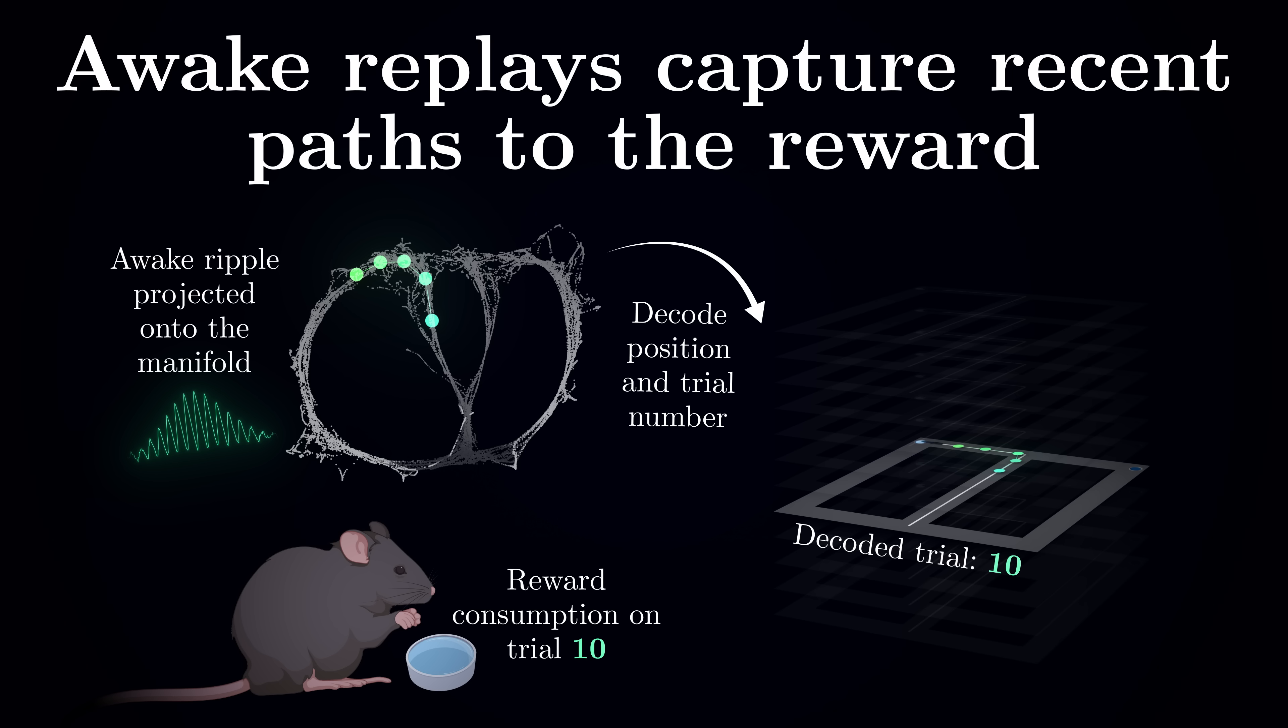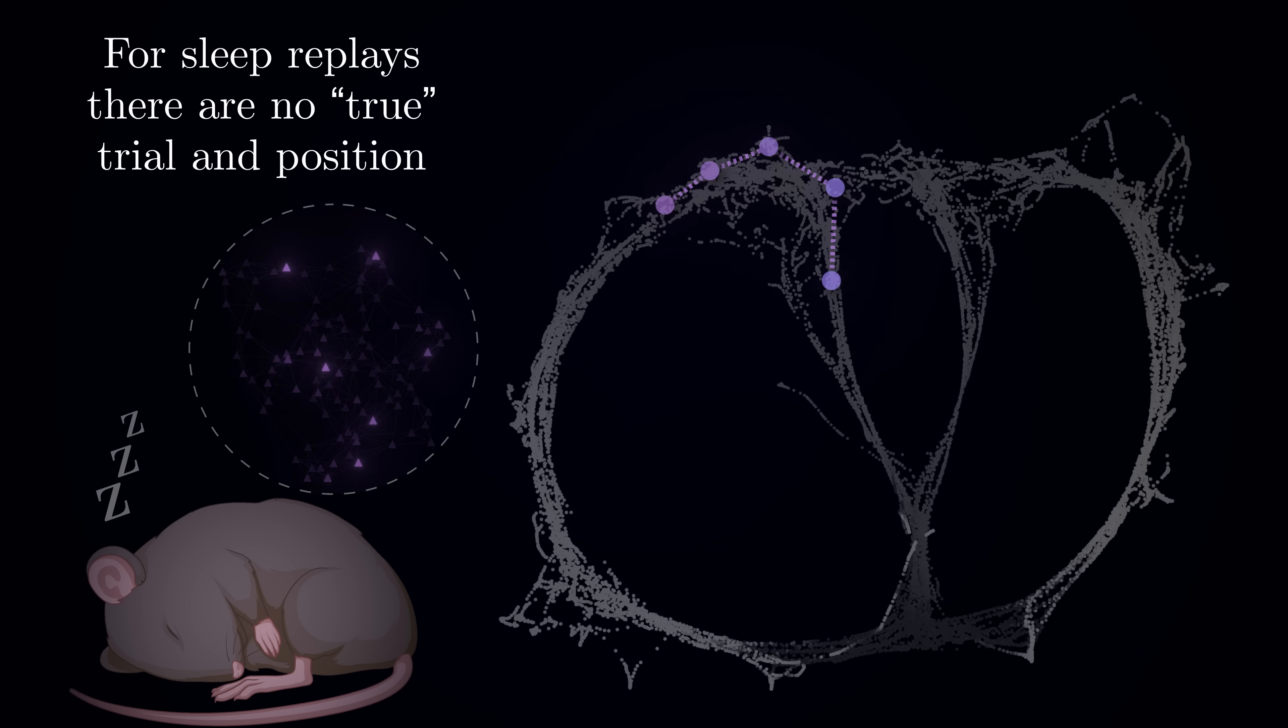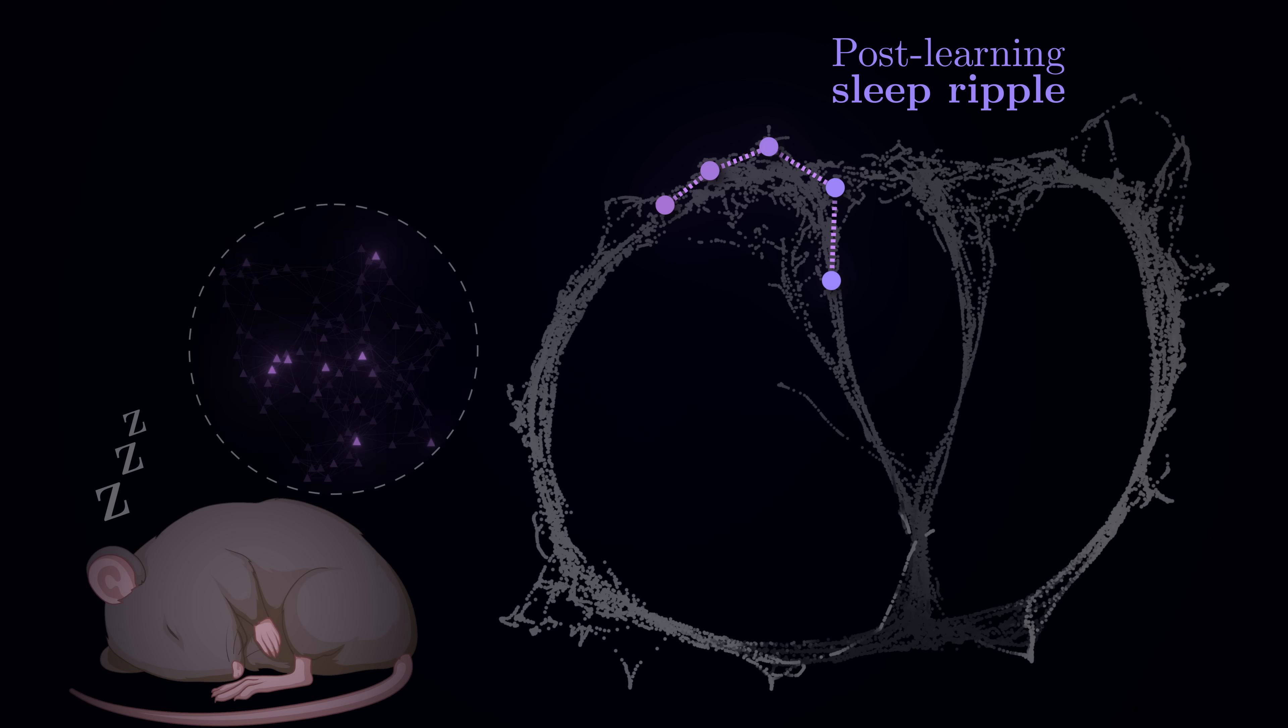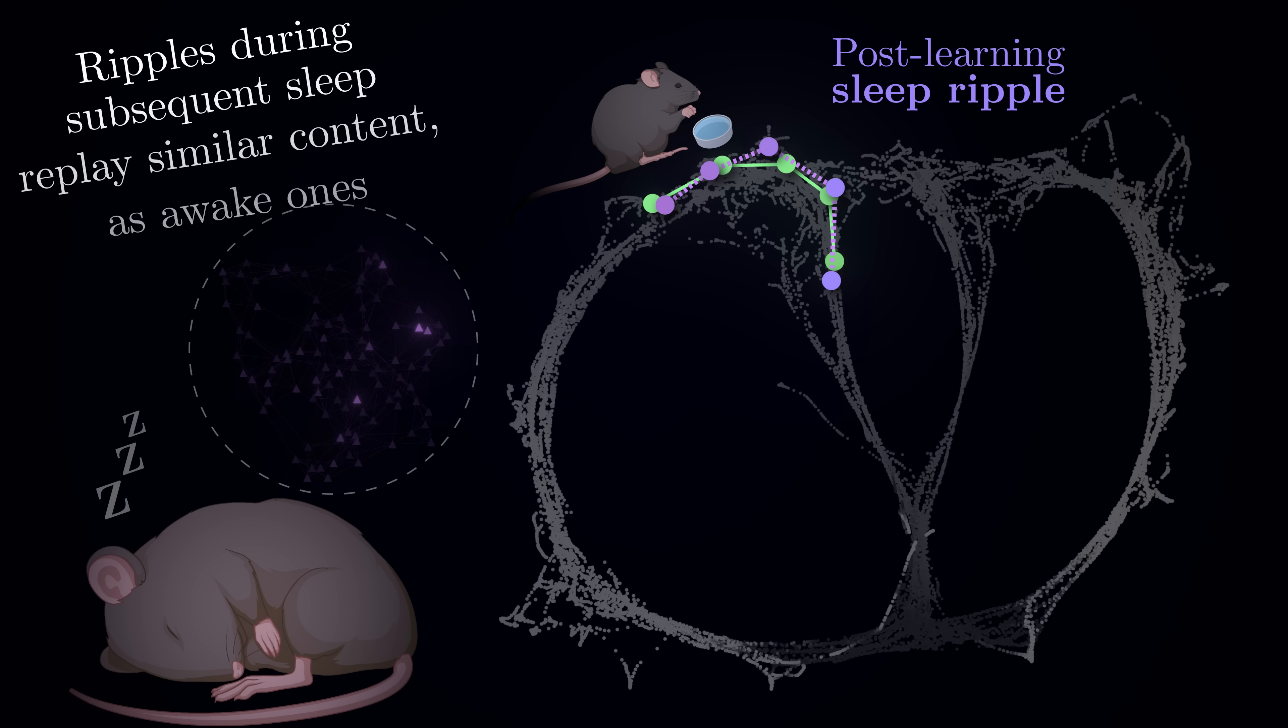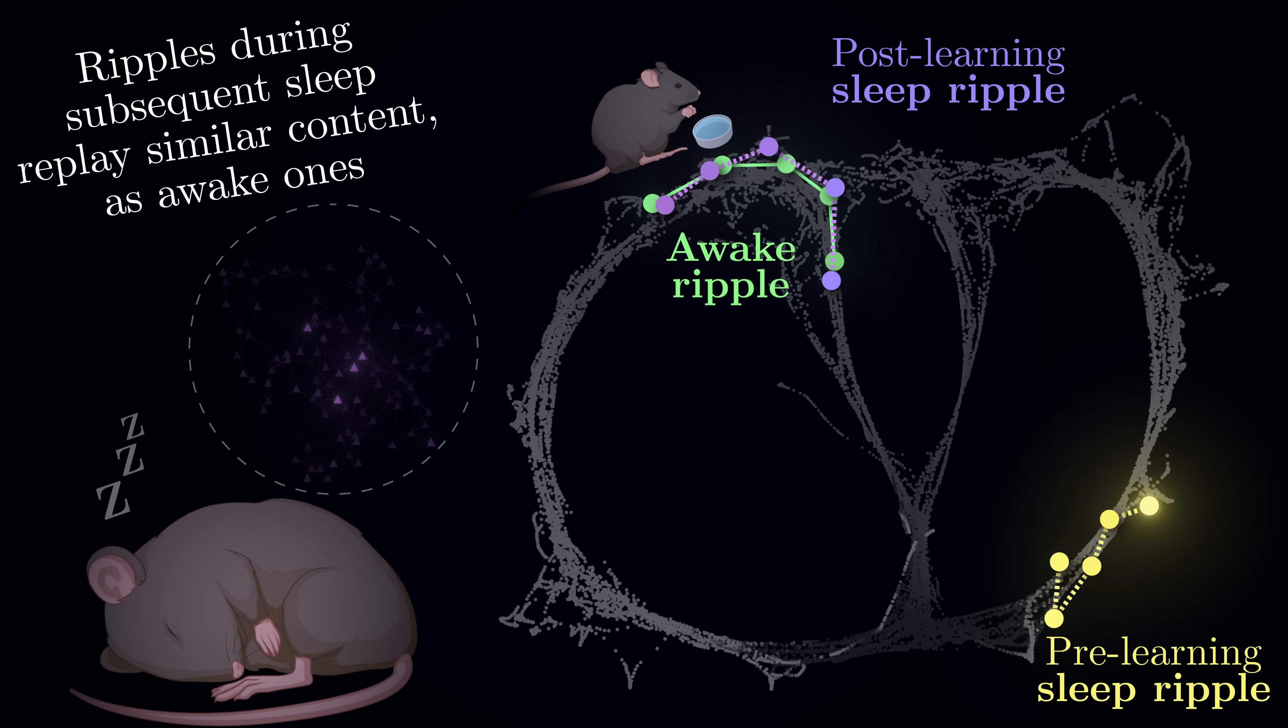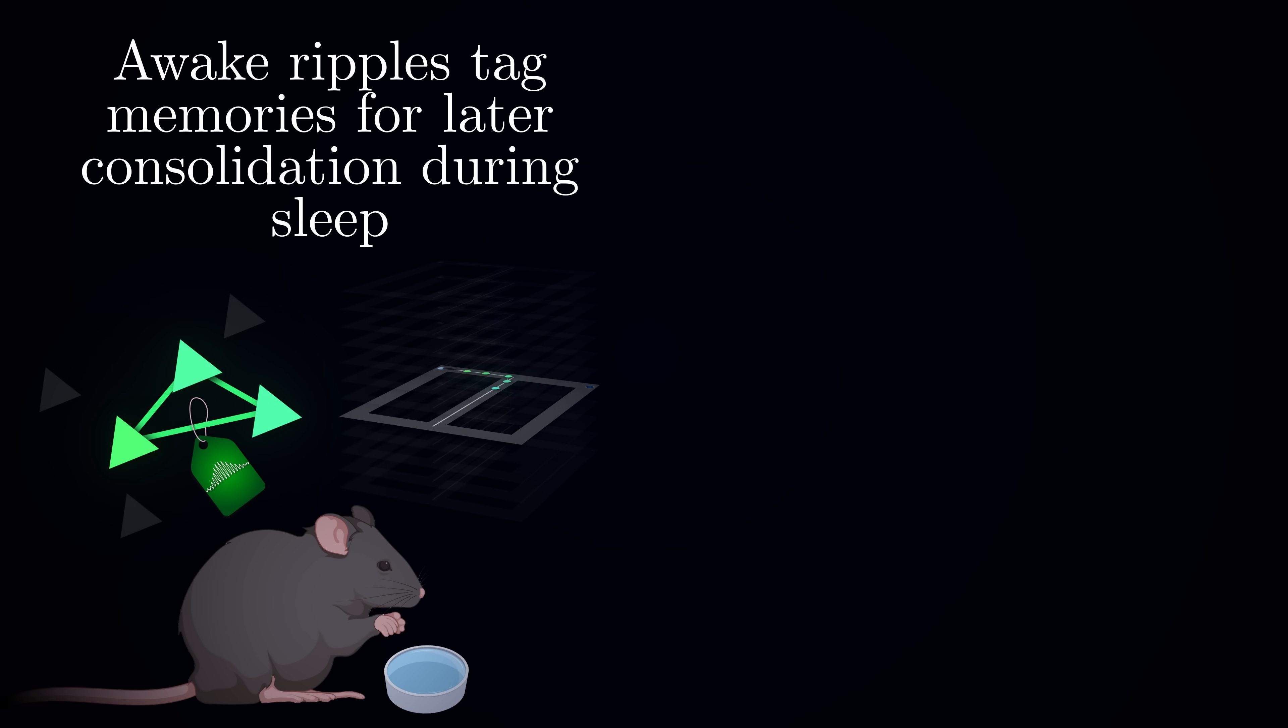But what about the ripples during subsequent sleep? While we can't know the animal's true position or trial number during sleep, we can still decode ripple content by mapping it onto our maze manifold. Remarkably, the sleep ripples that fall onto the manifold show striking similarities to the awake ripples. They replay similar trials and maze locations. In contrast, ripples recorded during sleep before the learning contain completely different patterns. This reveals a crucial mechanism: awake ripples serve to tag specific events for later consolidation.